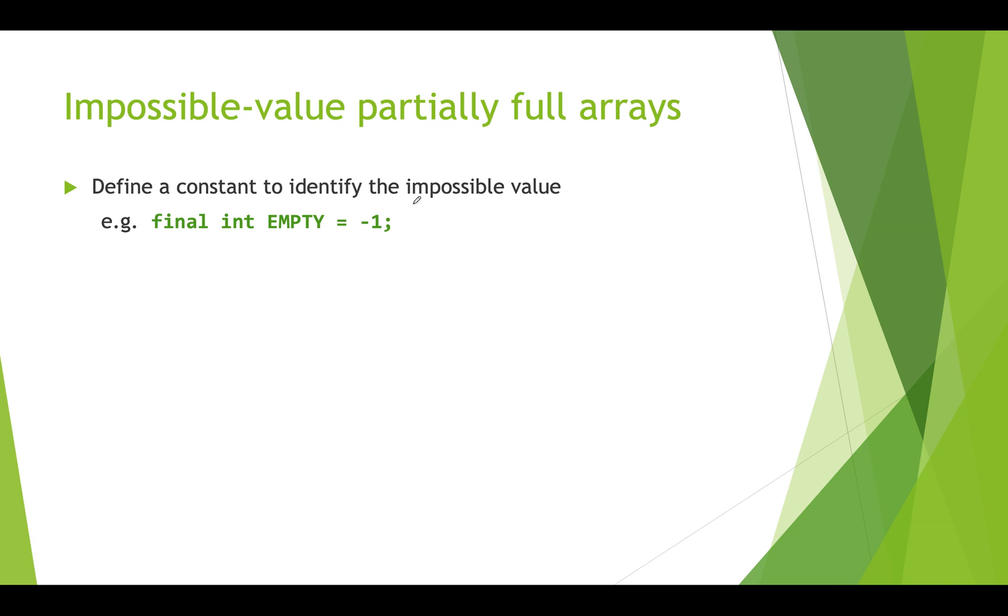So when we want to use impossible value partially full arrays, what we do is we declare a constant that actually defines what that impossible value is. So something like final int EMPTY equals negative 1. And then if we want to clear or set all the slots in an impossible value array to be open or empty, we use a loop and we go through and we just set every bin to this constant that we declare. So here we're looping through from 0 up to the length of the array and we're setting each slot to empty. So each slot would contain negative 1.